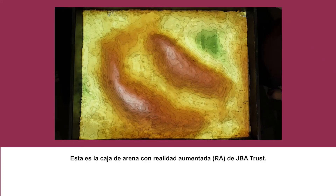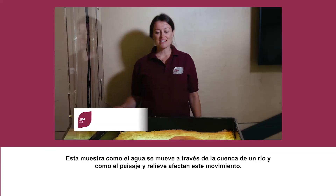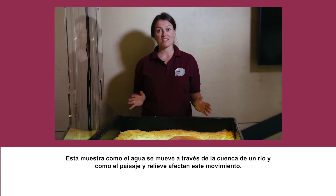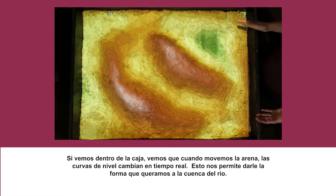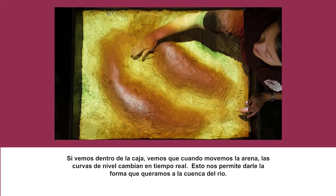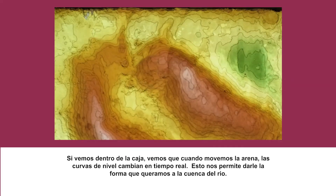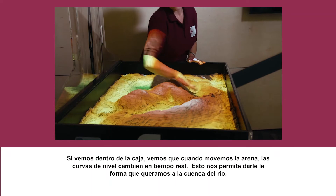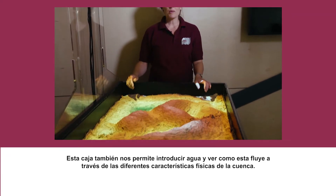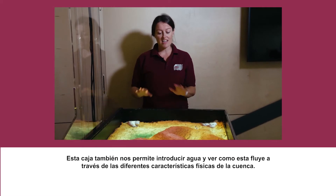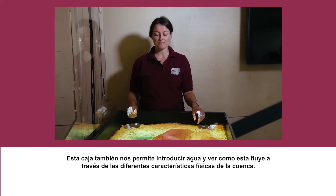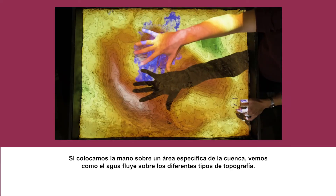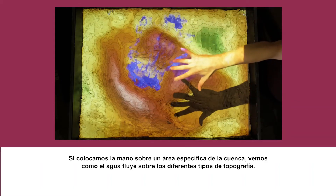This is the JBA Trust's augmented reality sandbox. It shows how water can move through a river catchment and how the landscape affects the flows of water. As we move the sand, the contours change in real time, so we can shape our own catchments however we like. We can also introduce water and see how it flows over different features, by holding a hand over a particular part of the catchment to see how water moves over different types of topography.